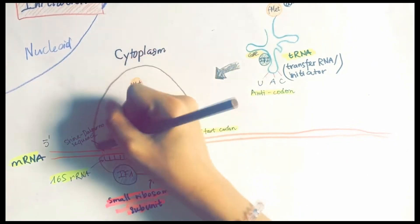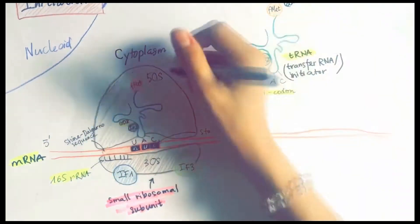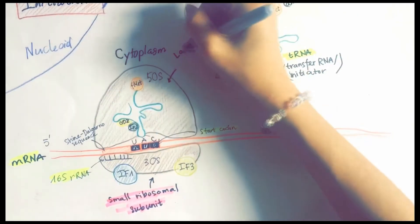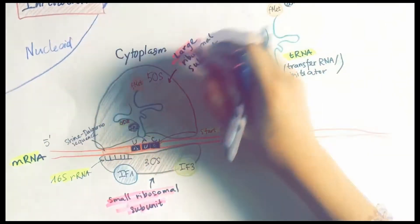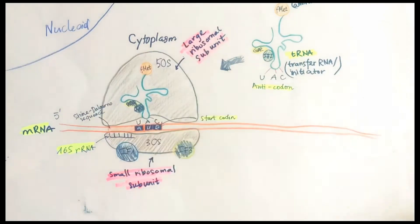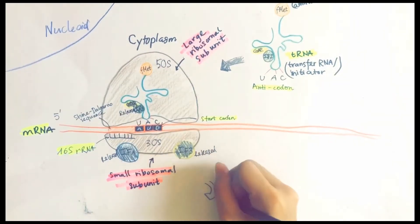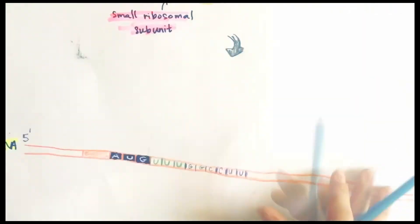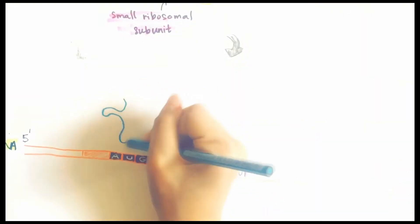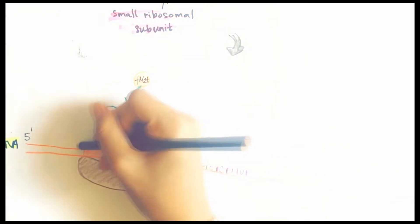After the mRNA and tRNA-fMet have become bound to the 30S subunit, IF1 and IF3 are released, and then IF2 hydrolyzes the GTP that was attached to it and is also released. This allows the 50S ribosomal subunit to bind with the 30S subunit, forming the 70S complex.